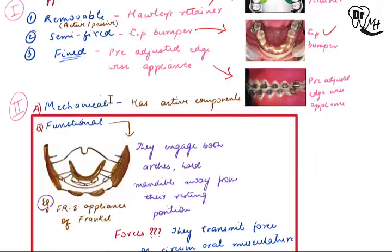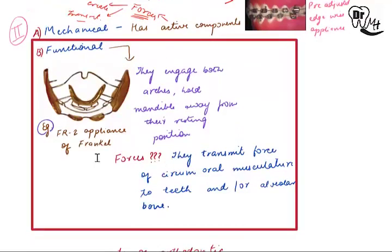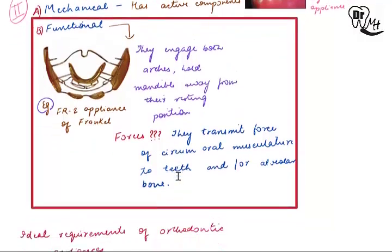The second classification is mechanical and functional. Mechanical appliances have an active component which brings about changes by applying forces — either creating or transmitting forces. Functional appliances engage both arches — the maxillary and the mandibular — and hold the mandible away from its resting position to bring about changes in arch discrepancies. An example is the FR2 appliance of Frankel. They transmit the force of the circumoral musculature to the teeth and alveolar bone.